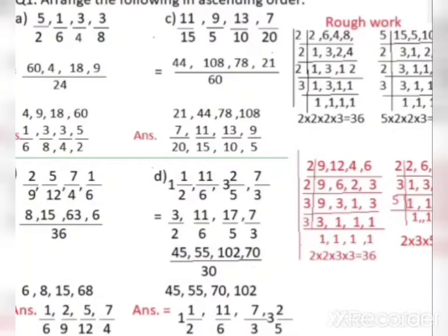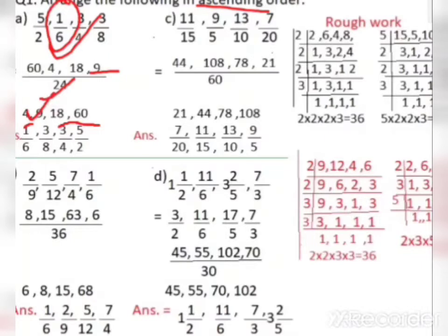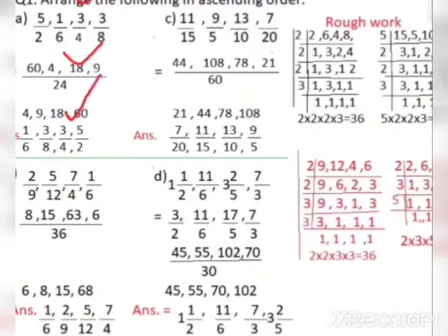Now comparing is easy. Ascending means smallest to biggest — like airplane going to air. The smallest numerator is 4, so 1/6 comes first. Then 9, which is 3/8 — second place. Then 18, which is 3/4. Then 60, which is 5/2. So the ascending order is: 1/6, 3/8, 3/4, 5/2. I think it is clear.